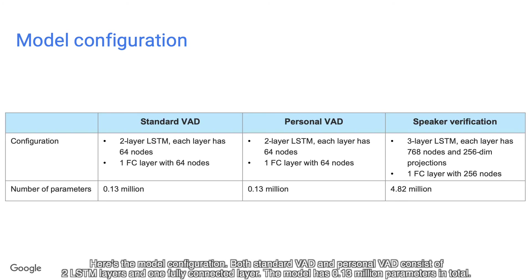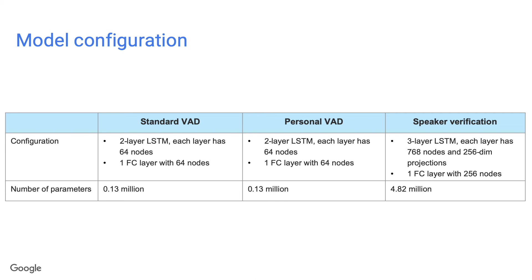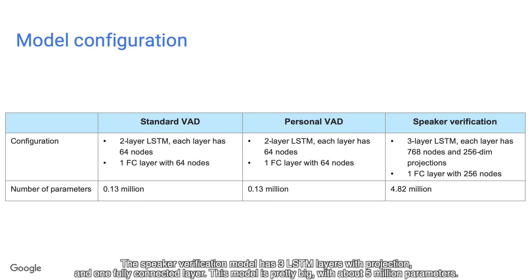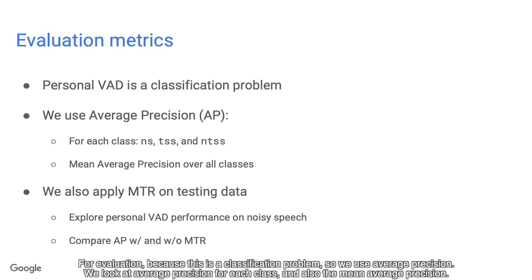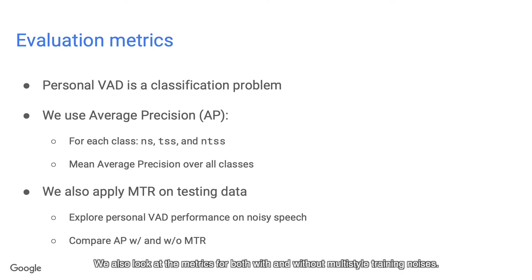Here is the model configuration. Both standard VAD and Personal VAD consist of two LSTM layers and one fully connected layer, with 0.13 million parameters in total. The speaker verification model has three LSTM layers with projection and one fully connected layer — it is pretty big with about 5 million parameters. For evaluation, since this is a classification problem, we use average precision for each class and also the mean average precision, measured both with and without babble-style training noises.